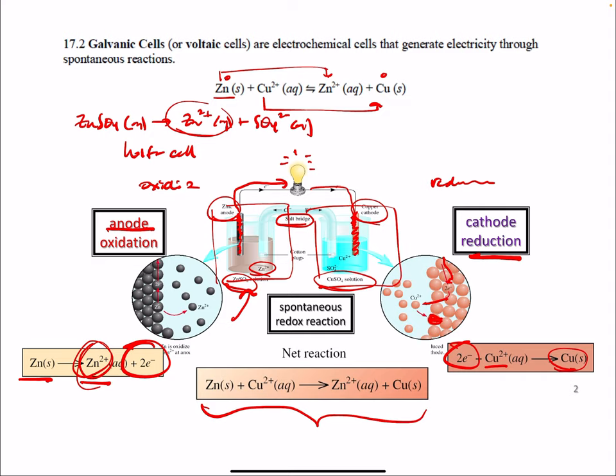And what happens is we have a salt bridge, and in here we have KCl. If that's soluble, it gives you K+ plus Cl-. If a positive charge is developing here, you can see chloride ions will come this way to neutralize that and complete the circuit.